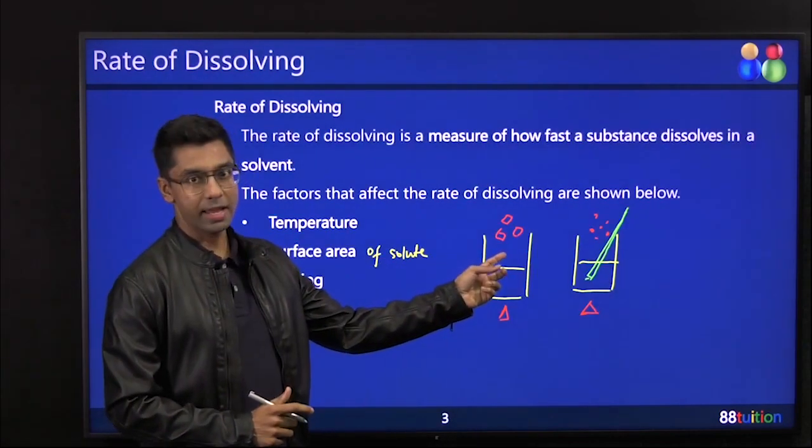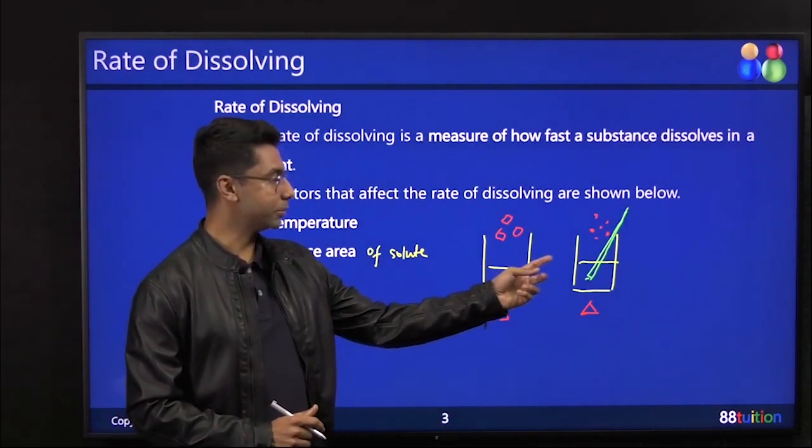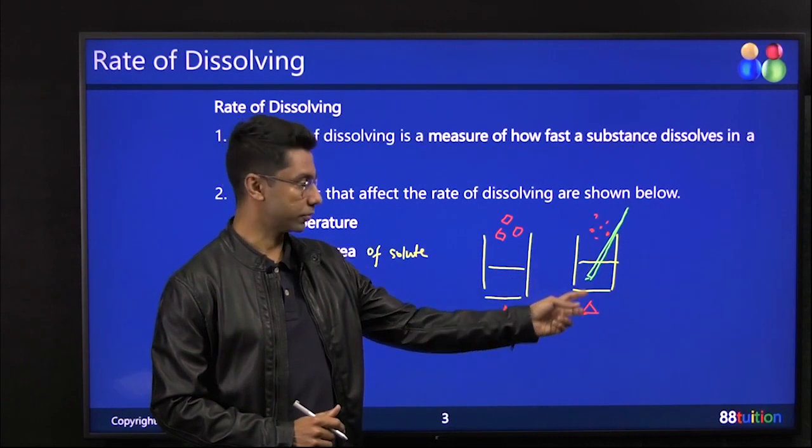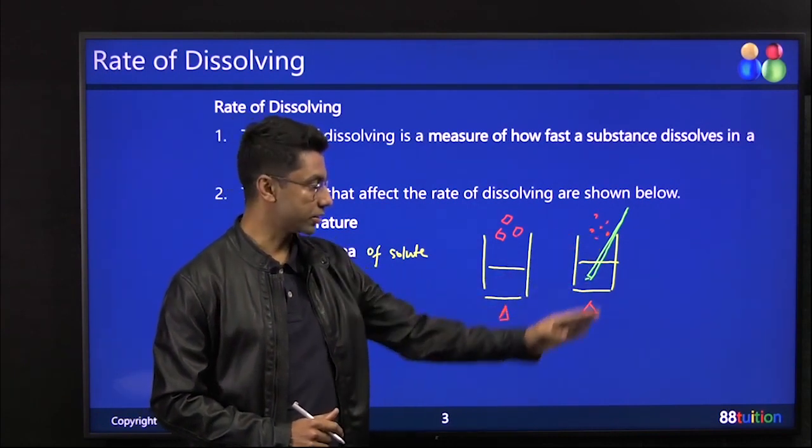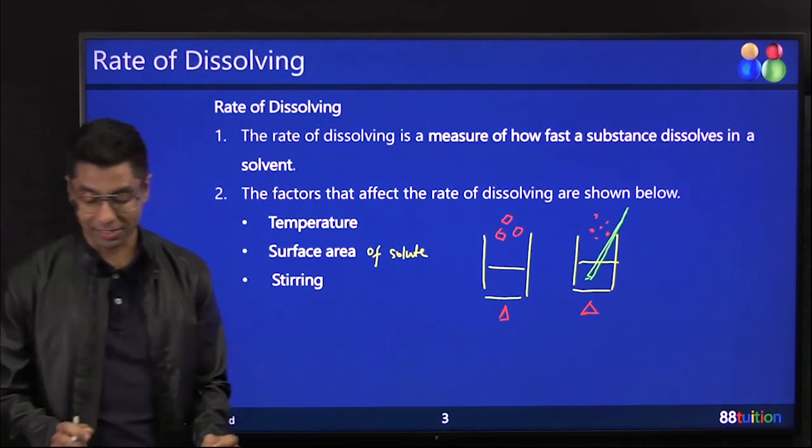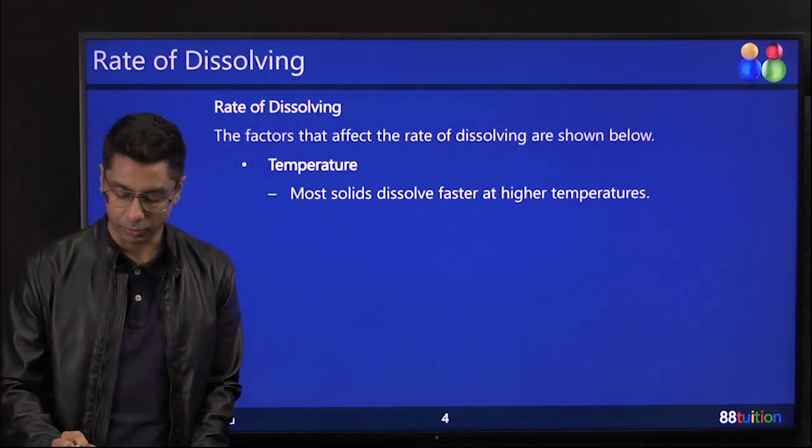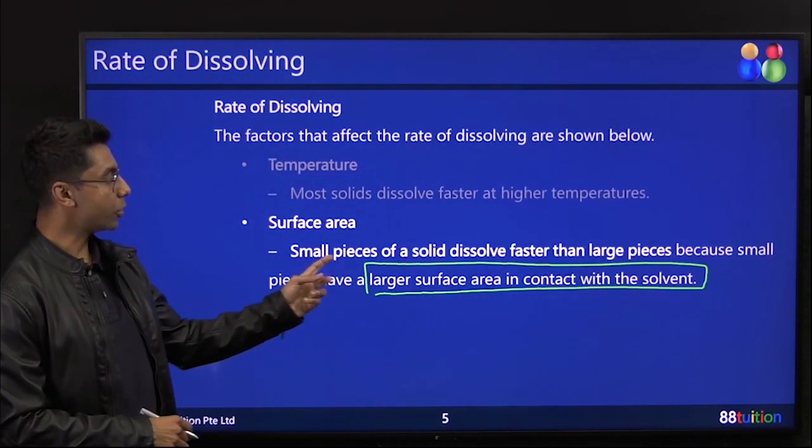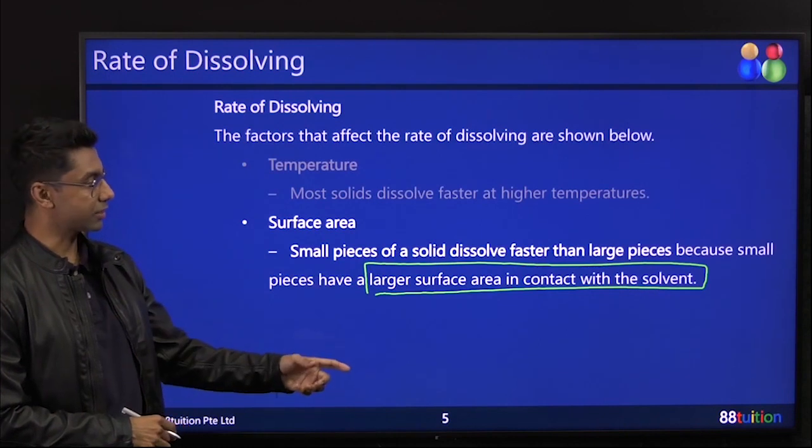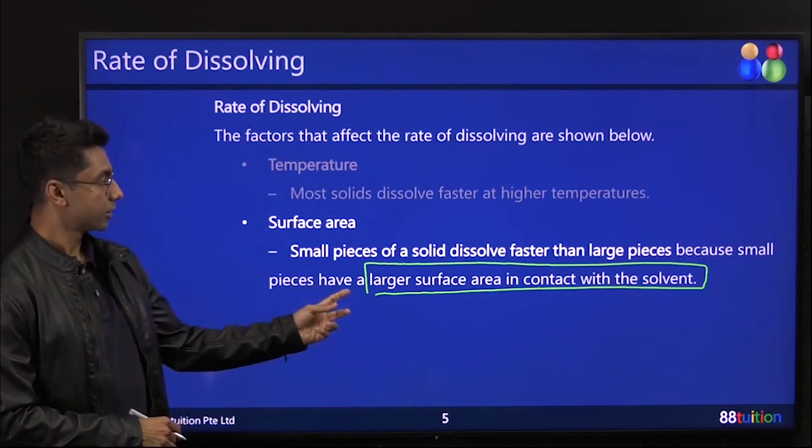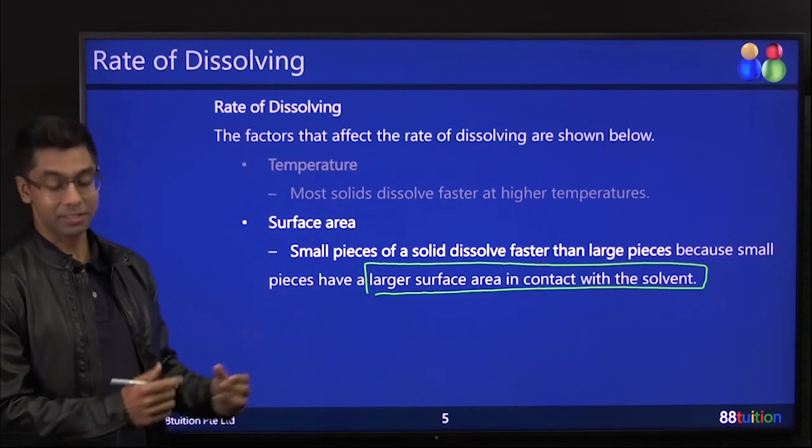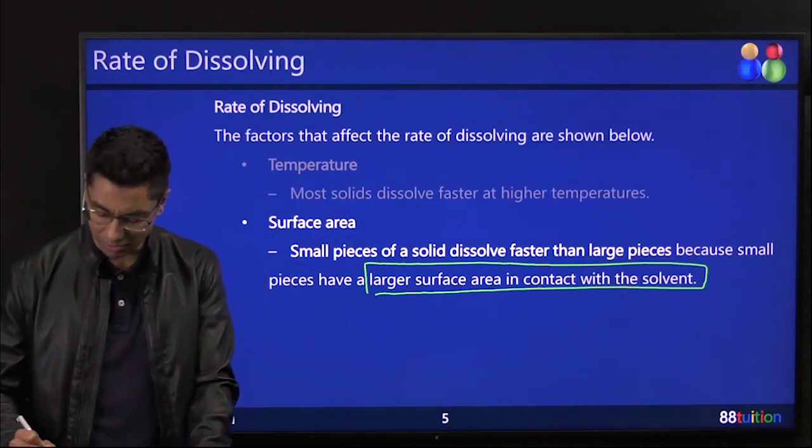Why did A take a longer time than B to dissolve? Of course, I'm not taking out the green stirrer and the heat, just talking about the size of the particle. Then we say, because small pieces of solid dissolve faster than large pieces because the small pieces have a larger surface area in contact with the solvent. What does that mean?